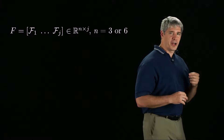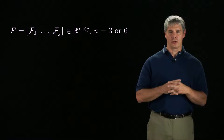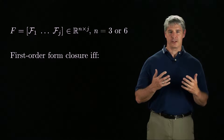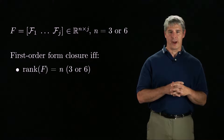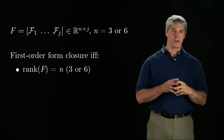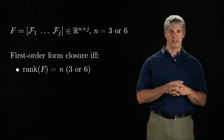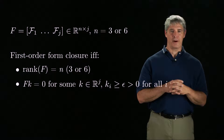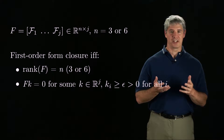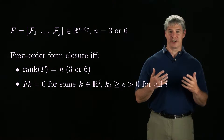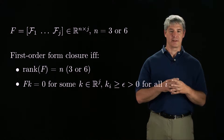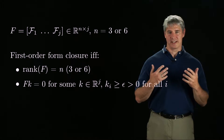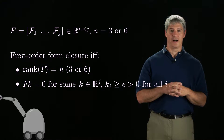Let F be the matrix of wrenches due to the J contact normals, where each wrench is a column of the matrix. Then the contacts create first-order form closure if and only if the rank of the F matrix is N, where N is three for planar bodies and six for spatial bodies, and F times K is equal to zero, where K is a J-vector of positive coefficients multiplying the wrenches. These two conditions together ensure that any wrench can be generated as a positive linear combination of the individual wrenches. This test can be implemented as a linear program in any scientific computing environment.